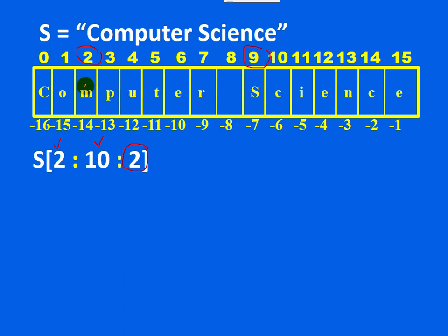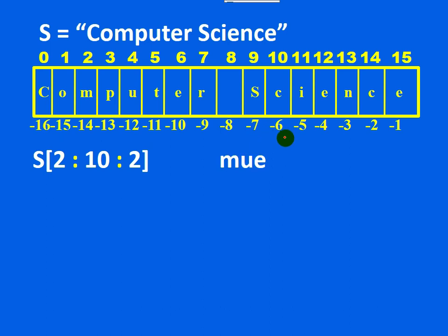Starting with index 2, in steps of 2: the first character returned is M at index 2. The next character is at index 4, then index 6, then index 8 which is the space character. The next index 10 is not within the range, so it is not taken. The characters returned are M, U, E, and space.